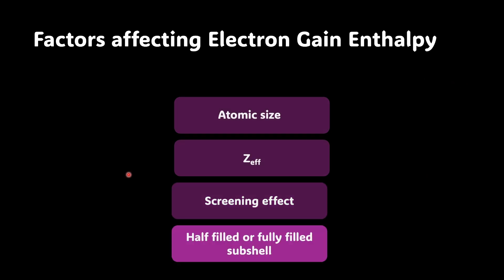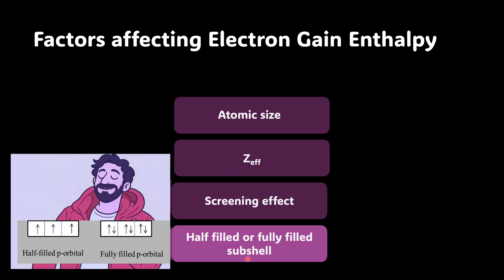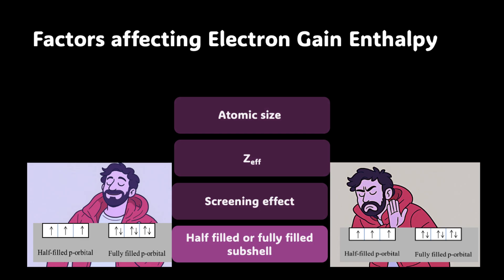The last and most interesting case involves half-filled or fully filled subshells. Most atoms want to gain an electron, but certain atoms don't want to accept an electron at all. Atoms with half-filled or fully filled subshells are in a very stable state. If you deliberately give them an electron, the addition disturbs the stability and introduces increased repulsion. So electron gain enthalpy is going to be less negative, or in some cases even positive.